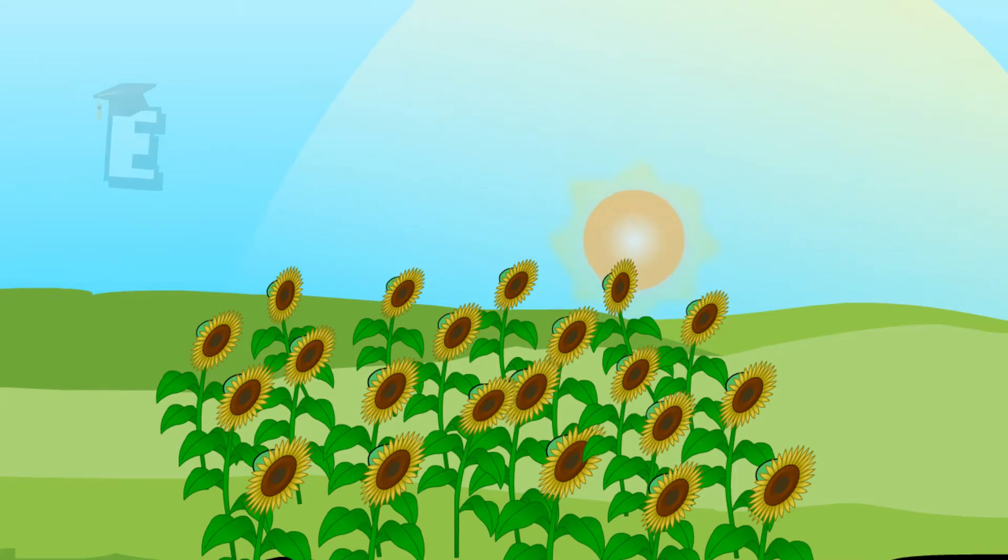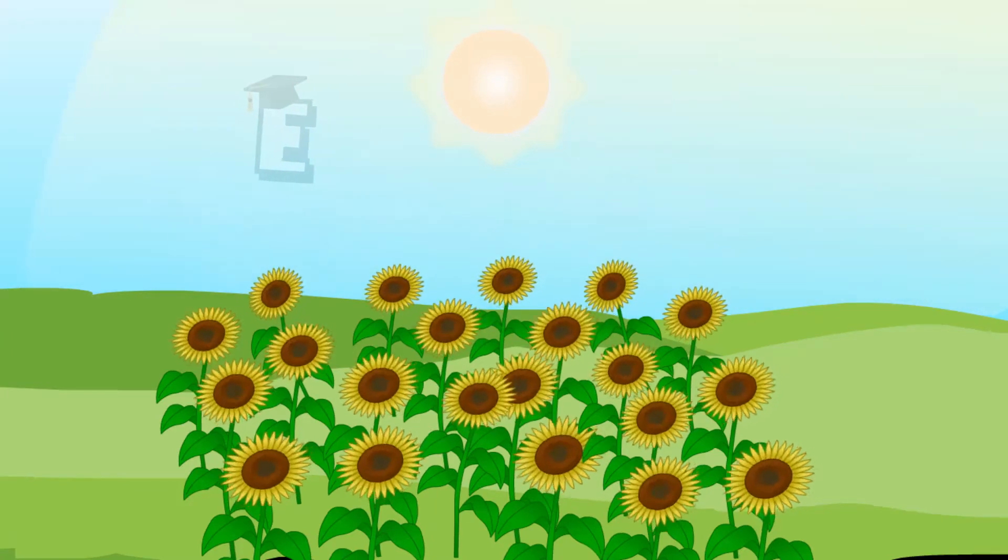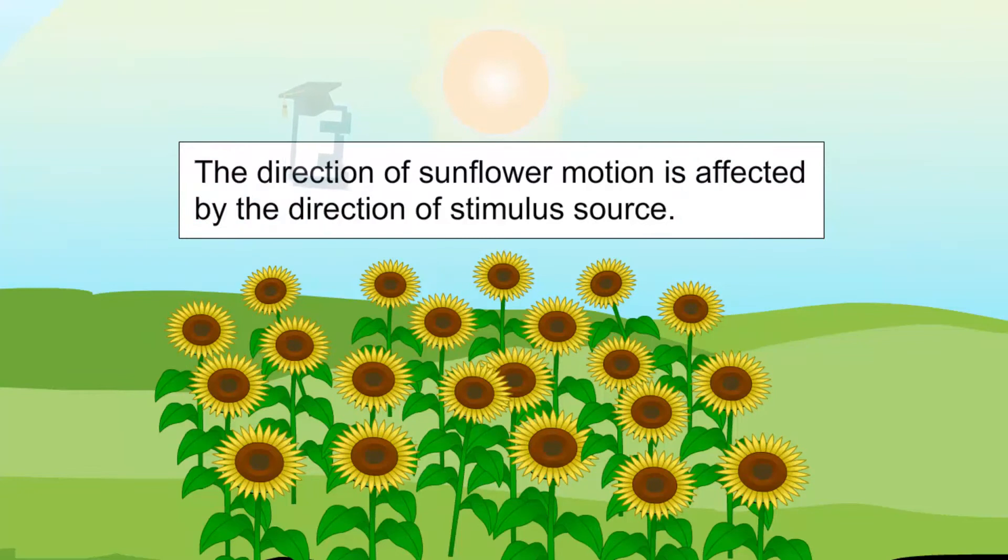We can find plants' motion which is caused by external stimulus in the movements of a sunflower. In the morning, the sunflower orients itself towards the direction of sunrise. At noon, the sunflower will orient itself vertically. This sunflower motion is called the tropism motion and its direction of motion is affected by direction of the stimulus.